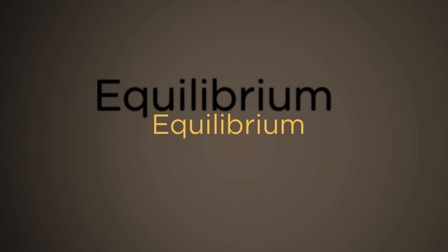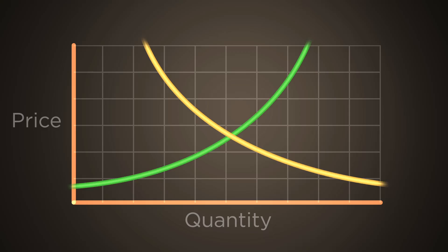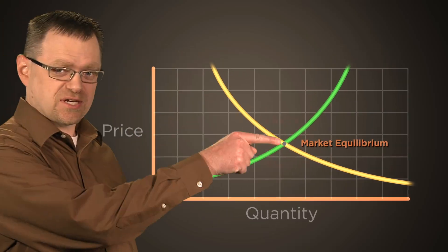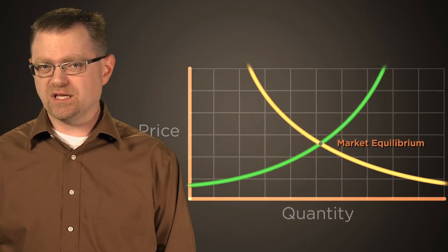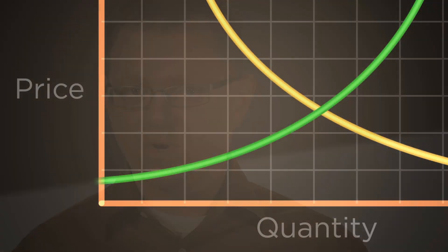Equilibrium. Is it supply or demand that determines the market price? The answer is both. Like the two blades of scissors, supply and demand work together to determine price. When you combine the supply and demand curves, there is a point where they intersect. This point is called market equilibrium. The price at this intersection is the equilibrium price, and the quantity is the equilibrium quantity. At the equilibrium price, there is no shortage or surplus. The quantity of the good that buyers are willing to buy equals the quantity that sellers are willing to sell.